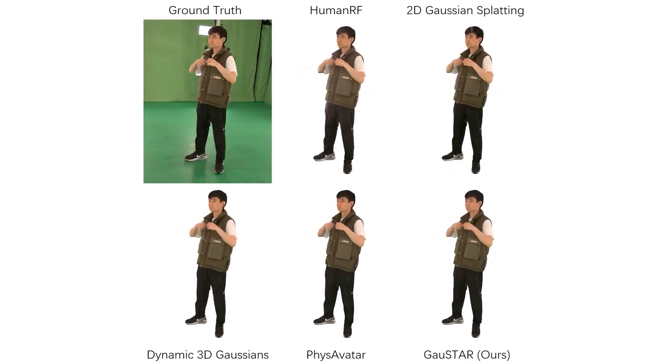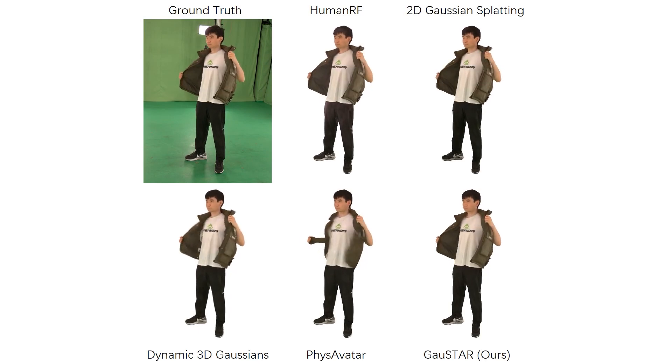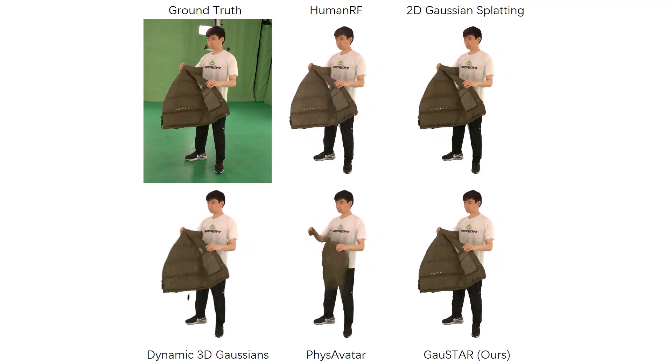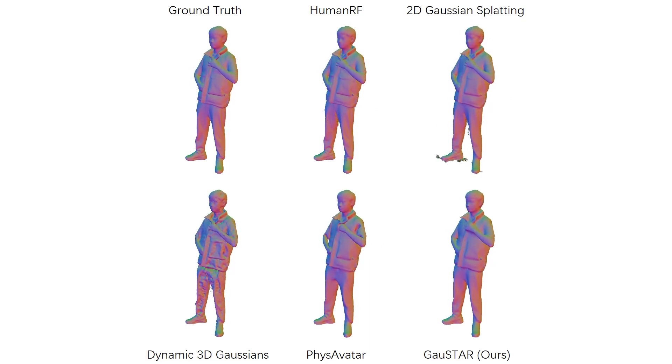Now we compare Gaustar with state-of-the-art methods. HumanRF is a NeRF-based method and lacks tracking capabilities, while 2D Gaussian splatting struggles with both tracking and temporal stability. Dynamic 3D Gaussians produces noisy surfaces.